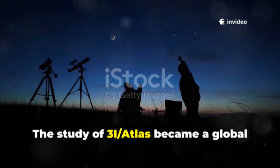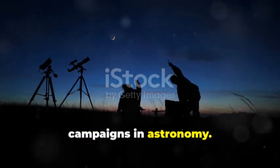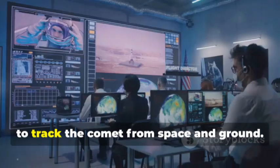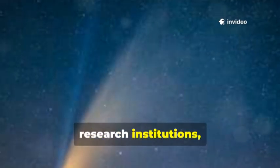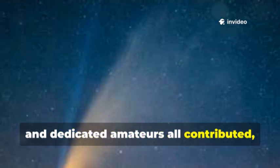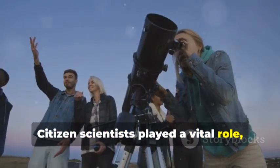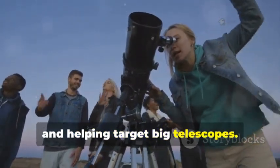The study of 3i-Atlas became a global effort, one of the largest collaborative campaigns in astronomy. NASA, ESA, and observatories worldwide coordinated to track the comet from space and ground. University teams, research institutions, and dedicated amateurs all contributed, monitoring its brightness and activity. Citizen scientists played a vital role, alerting professionals to sudden changes and helping target big telescopes.